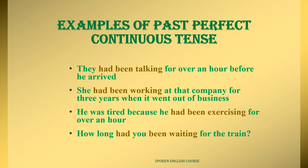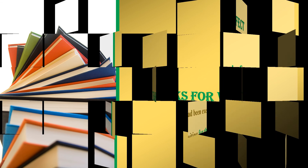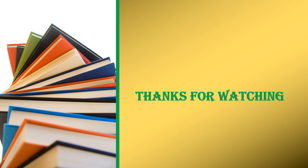More examples: 'He was tired because he had been exercising for over an hour' — the continuous action 'had been exercising' led to the result 'tired.' 'How long had you been waiting for the train?' — this is a question form using had been waiting. So that covers all four types of past tense. More details in my next video. Thank you.